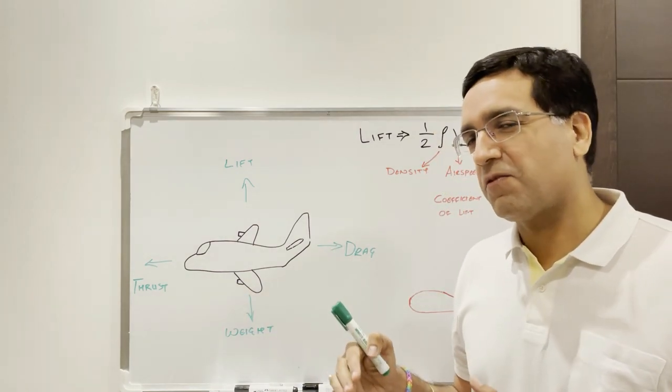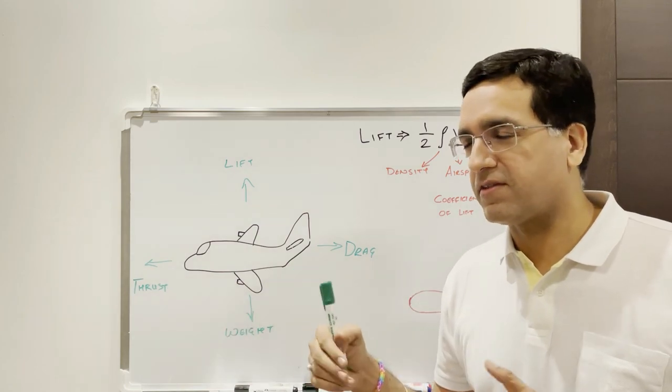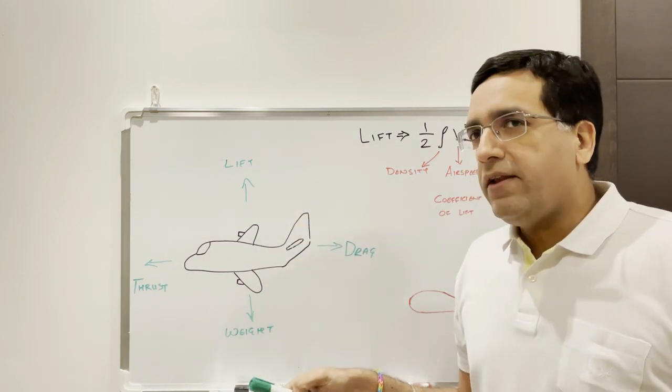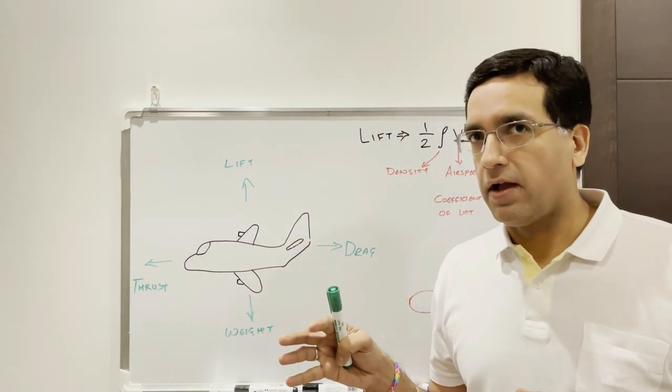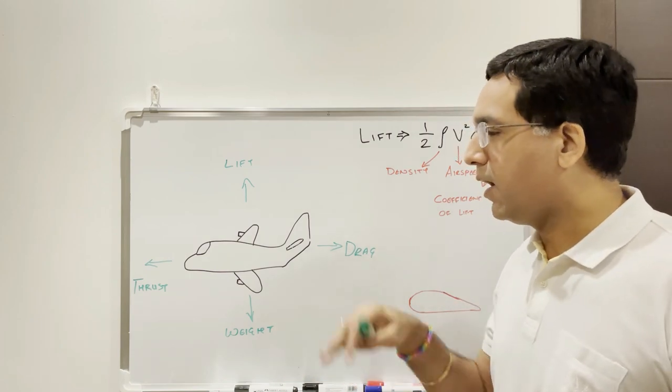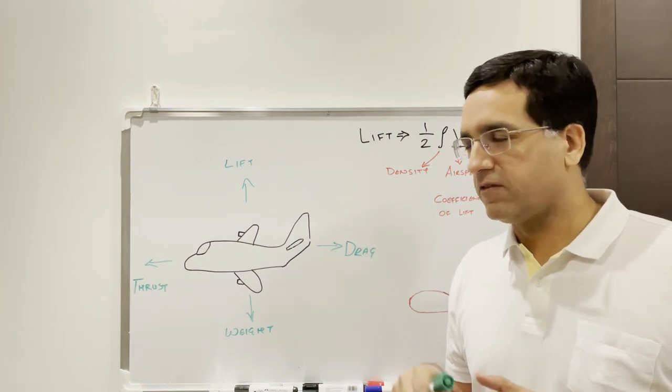When thrust is greater than drag, that's when an aircraft accelerates, and vice versa. Lift and weight are typically in balance in flight. How an aircraft climbs and descends, it's a different story.